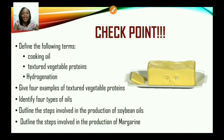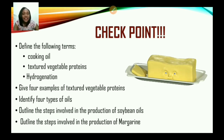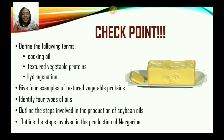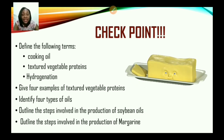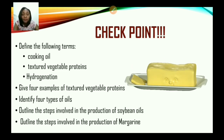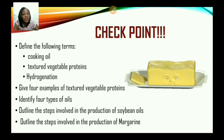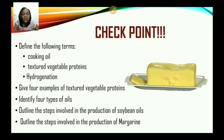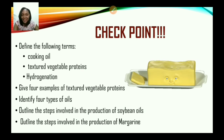Checkpoint. Define the following terms: cooking oil, textured vegetable proteins, hydrogenation. Give four examples of textured vegetable proteins. Identify four types of oil. Outline the steps involved in the production of soybean oils. And also outline the steps involved in the production of margarine.